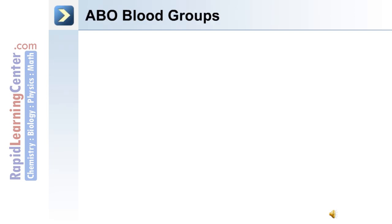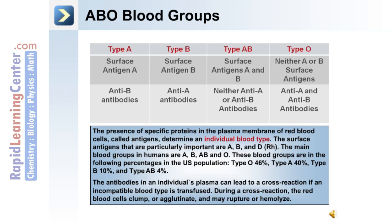The process of cross-matching for a blood transfusion includes the identification of the ABO blood group. The presence of specific proteins in the plasma membrane of red blood cells, called antigens, determines an individual's blood type. The types are type A, type B, type AB, and type O. The surface antigens that are particularly important are the ABO and Rh antigens.